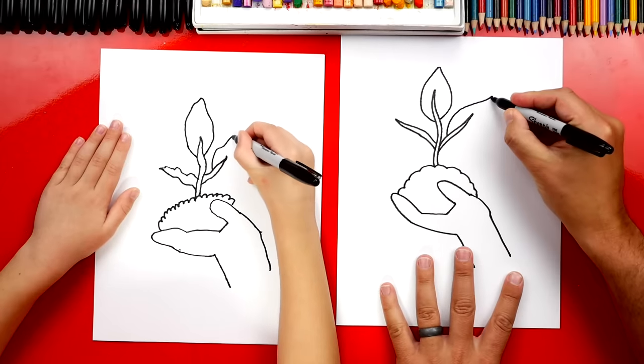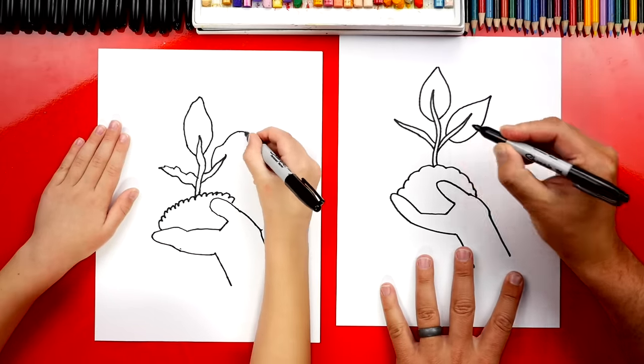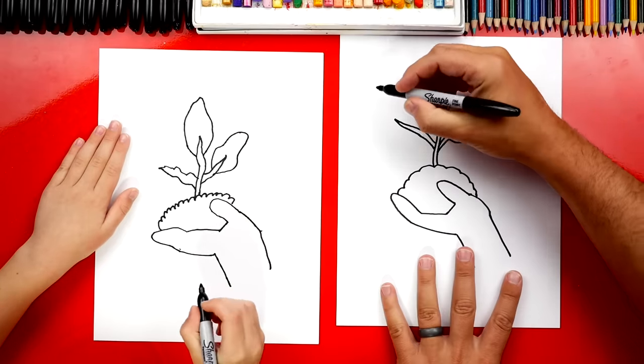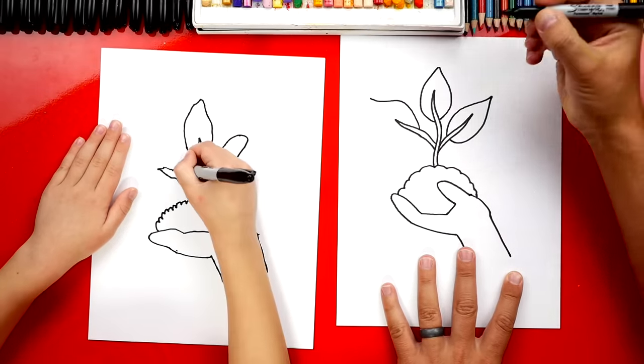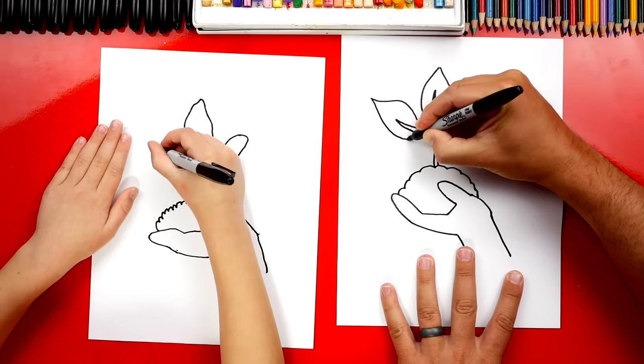Come out to a point, back in, curve into the stem, or the branch. And then let's do the same thing on the last one over here on the left. Back in, curve in.